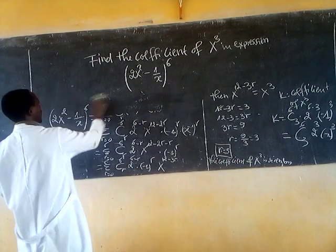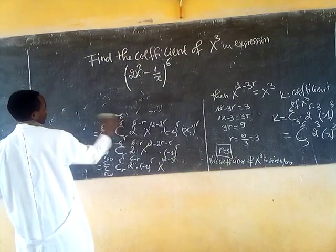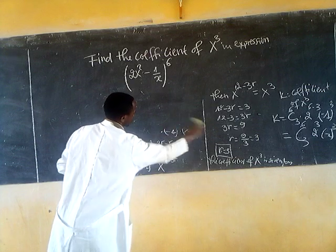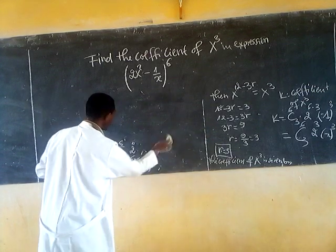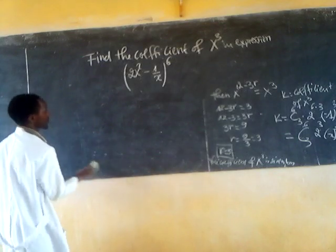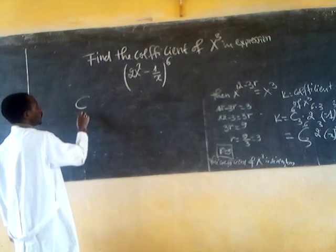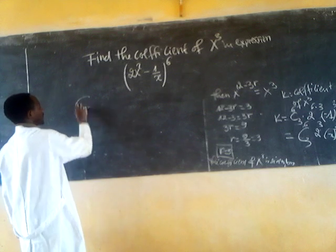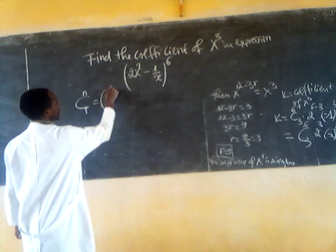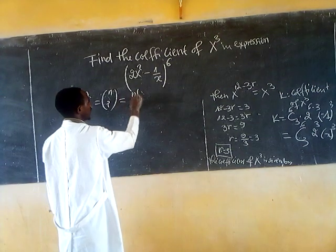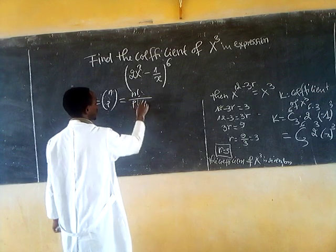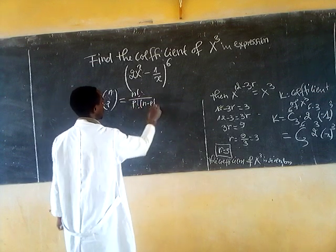Let's come back and remember the combination formula. The combination of n choose p equals n factorial divided by p factorial times (n minus p) factorial.